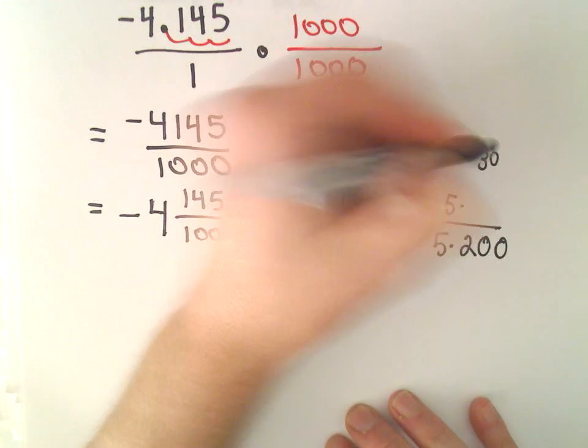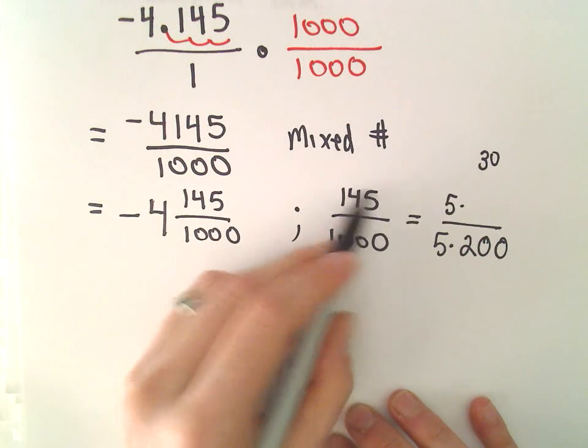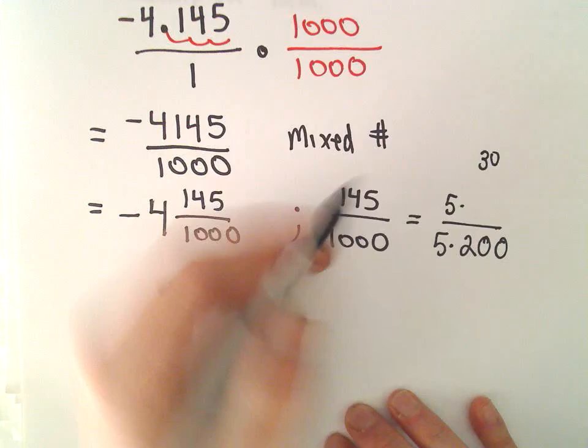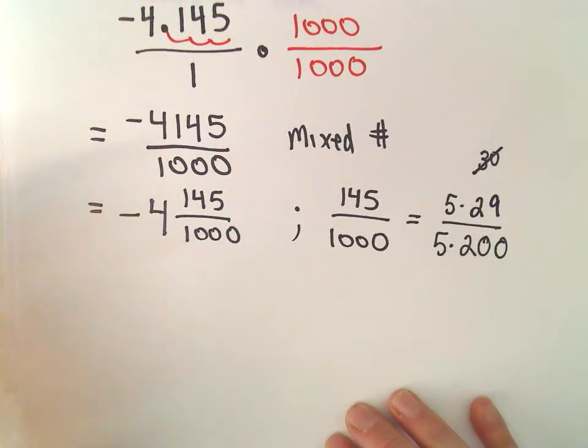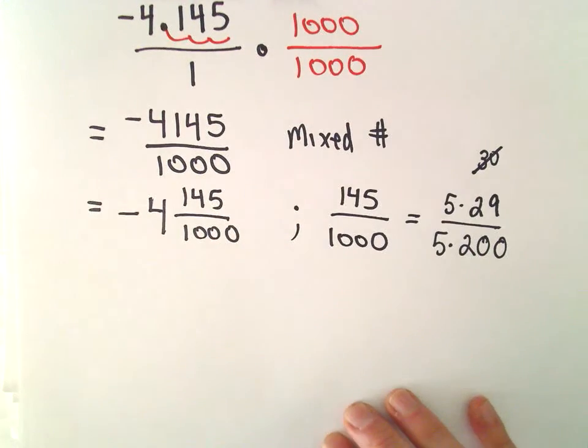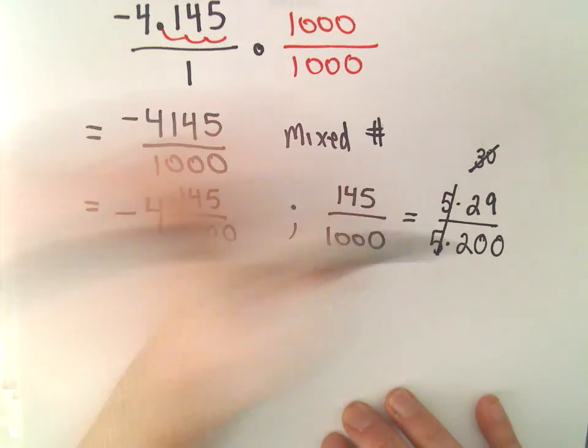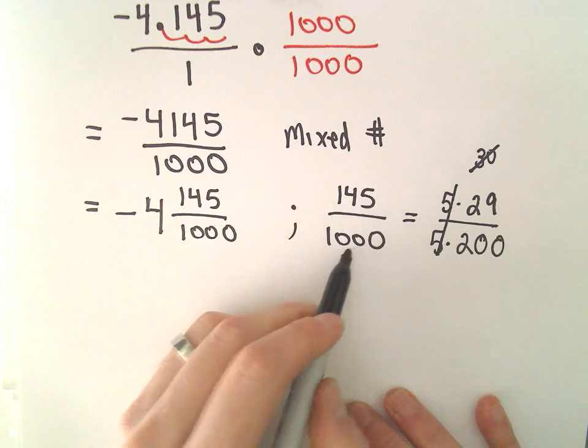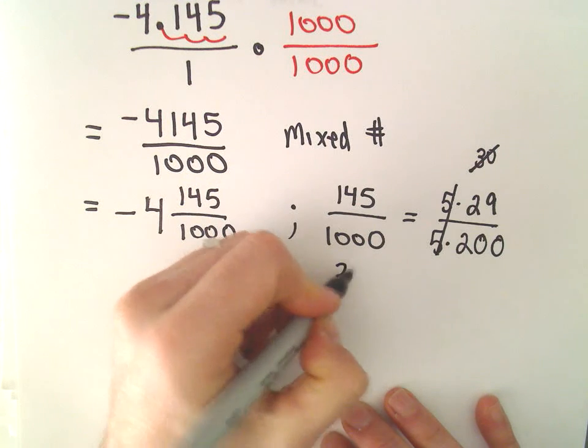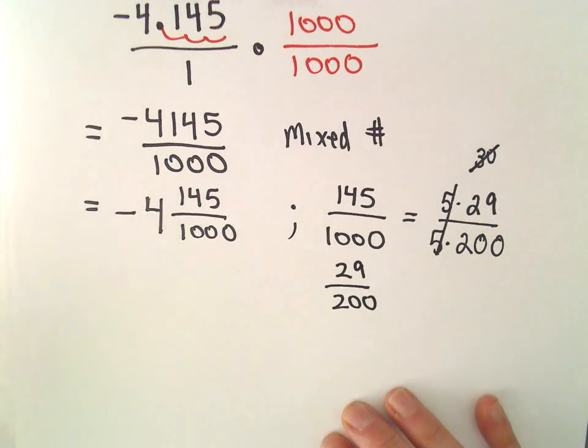Let's see. 5 times 30 would be 150, but that's kind of one multiple too big. So instead of 30, we'll need one smaller, which I think would be 29. We can just cancel out our 5s. So 145 over 1,000 we can write that as 29 over 200.